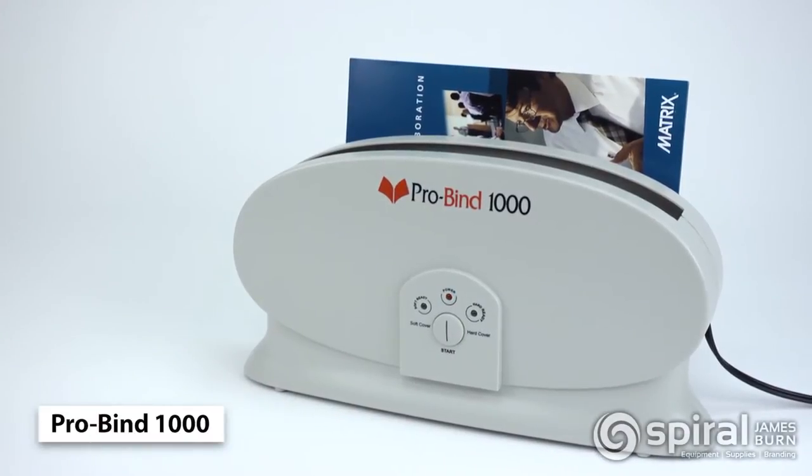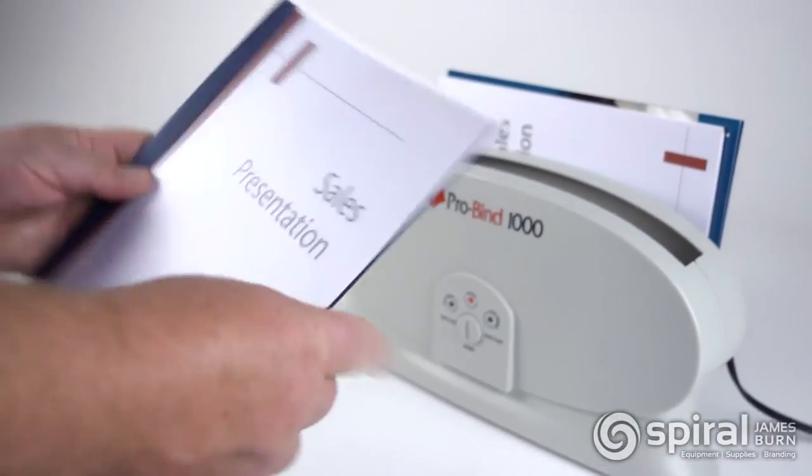The ProBind 1000 is a thermal binding machine designed for organizations that are looking for a binding system that is both dependable and easy to use.